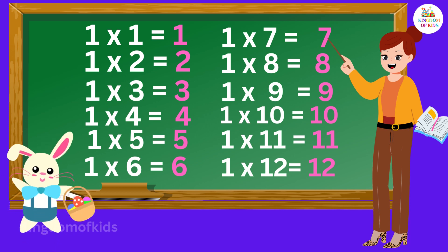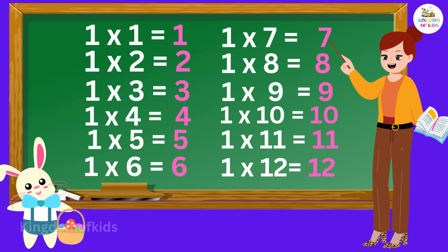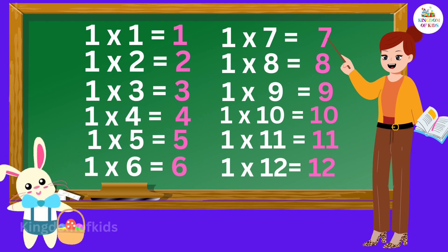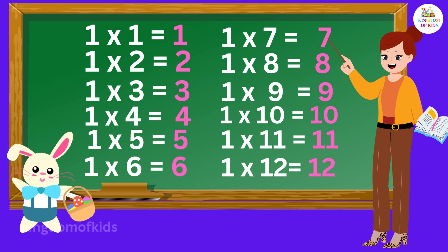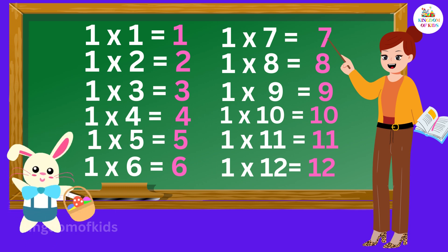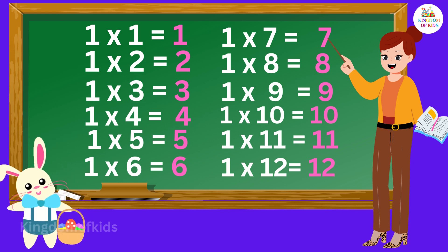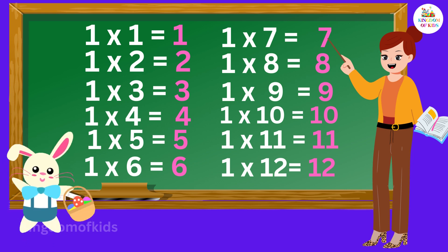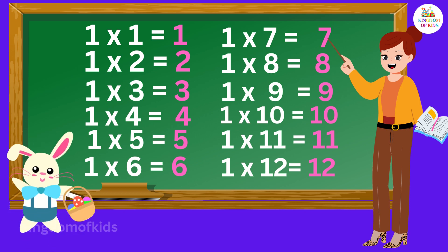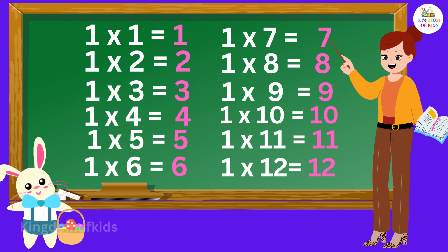One sevens are seven, one eights are eight, one nines are nine, one tens are ten.